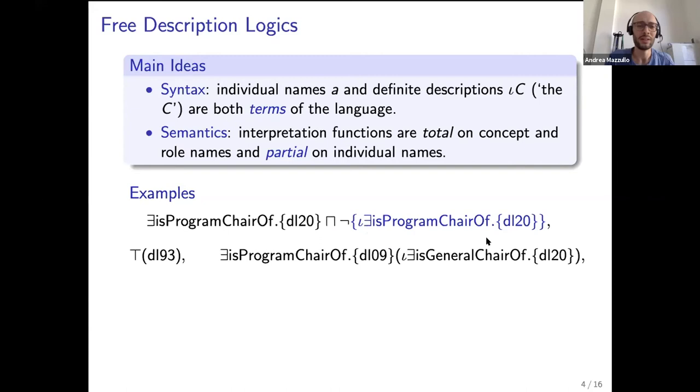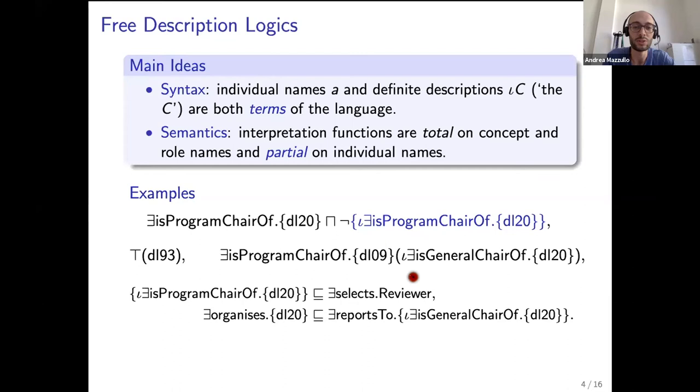We can also express more complex queries like Boolean instance queries that ask whether DL93 denotes anything at all, formalized by top of DL93, or whether the general chair of DL20 is also a program chair of DL09, and of course concept inclusions that involve these new kinds of nominals and features.